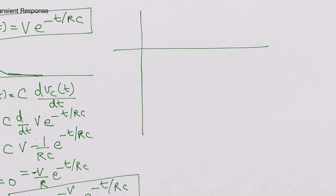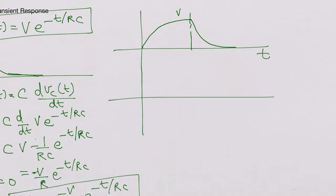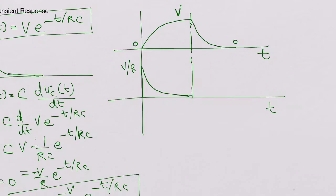If we plot both charging and discharging together: the voltage charges exponentially up to V, then at the point where S2 is closed it discharges back down. For the current, the positive charging current starts at V/R and decays to zero, then during discharging the current goes negative to −V/R and returns to zero.